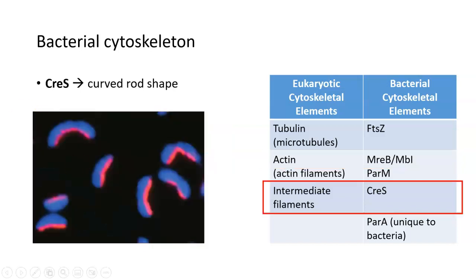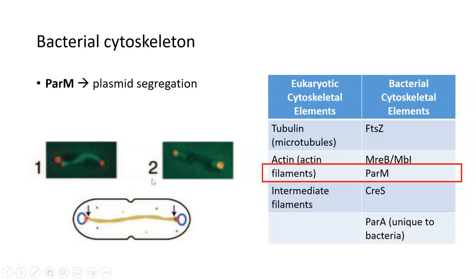Another cytoskeletal protein that can cause shape in bacteria is called CreS, which stands for crescent. This is actually localized here in red in the bacterial cells. What it does is it provides a curved rod shape for certain bacteria that have this kind of comma shape to them.